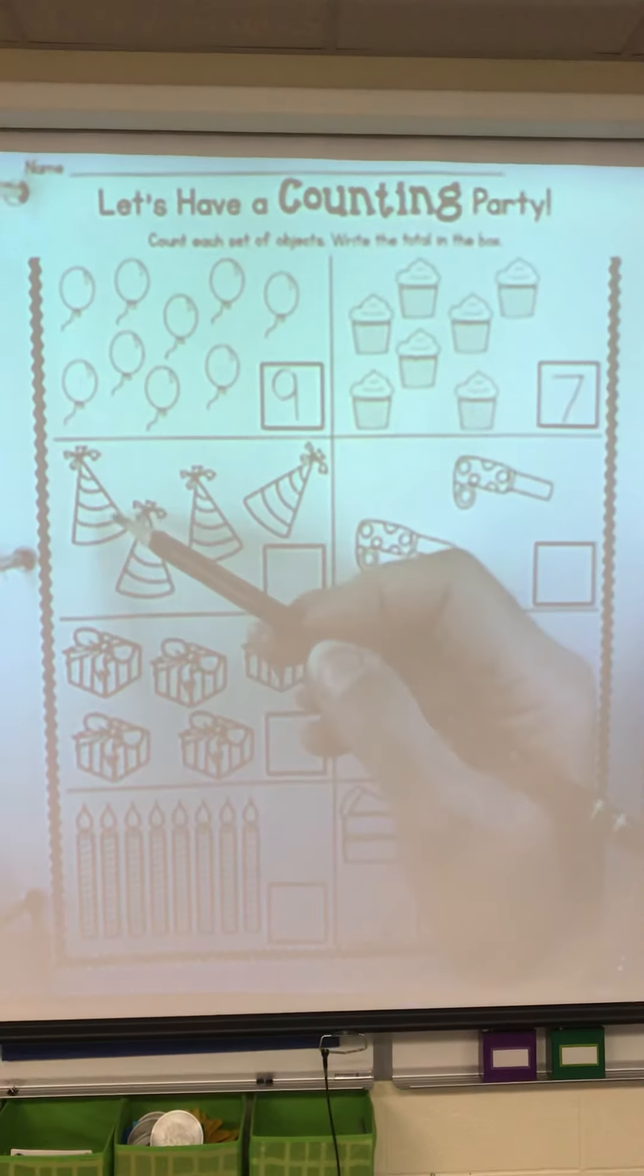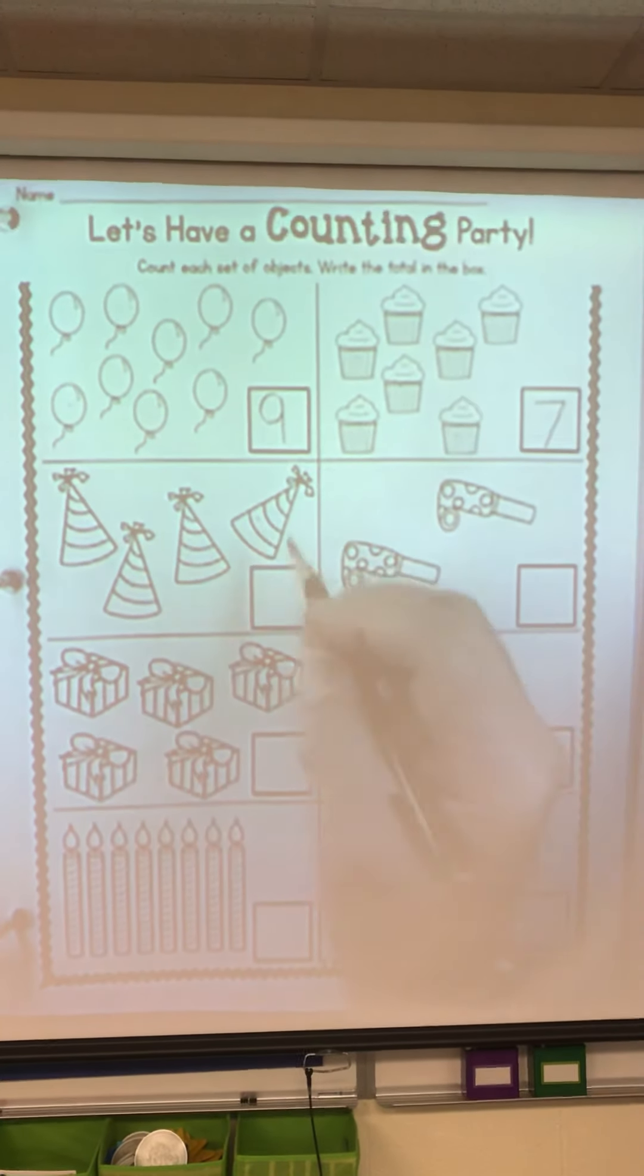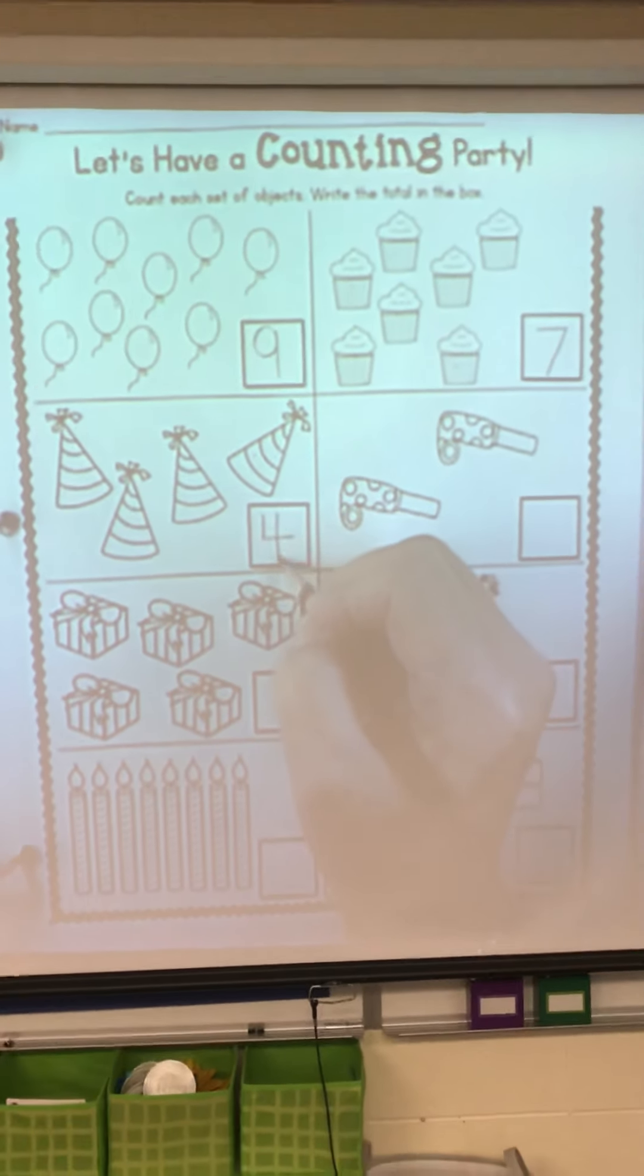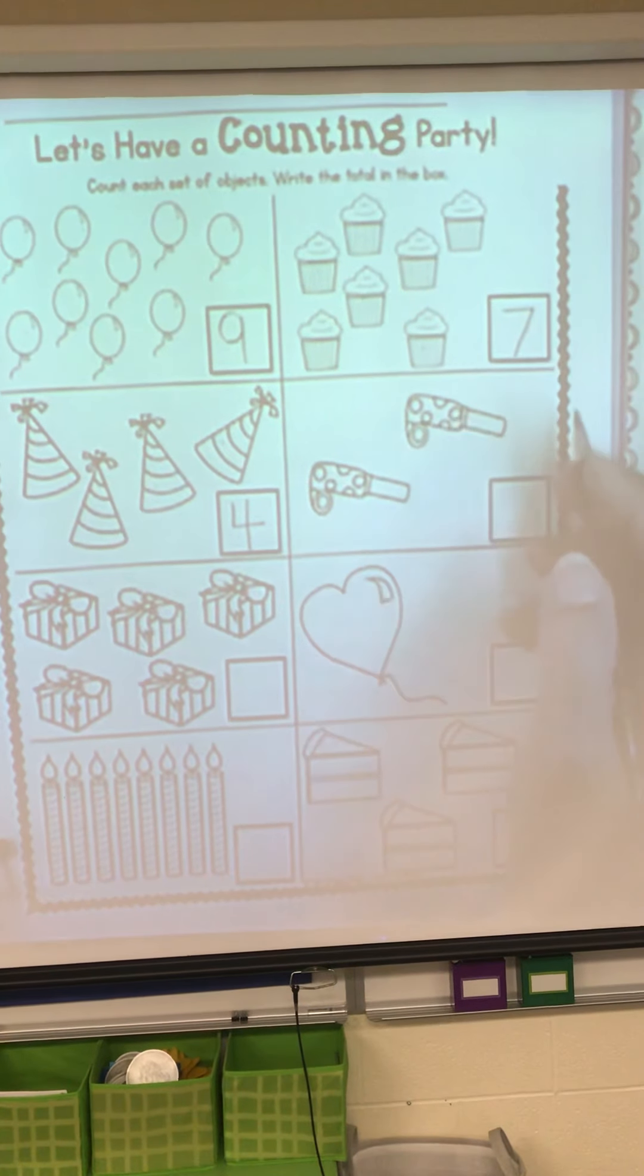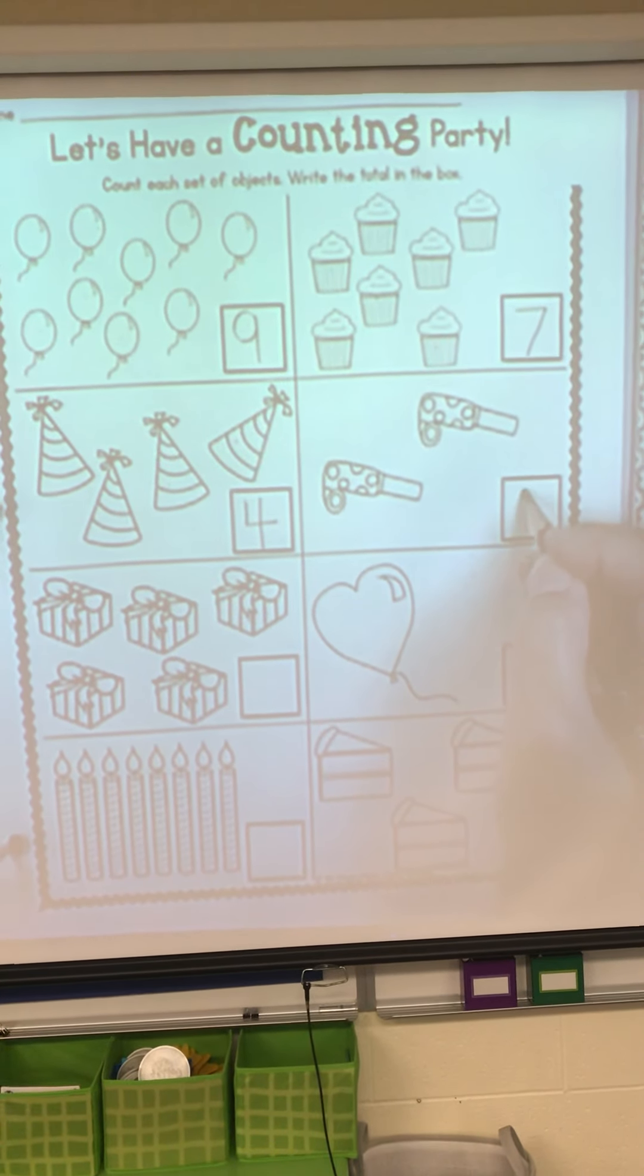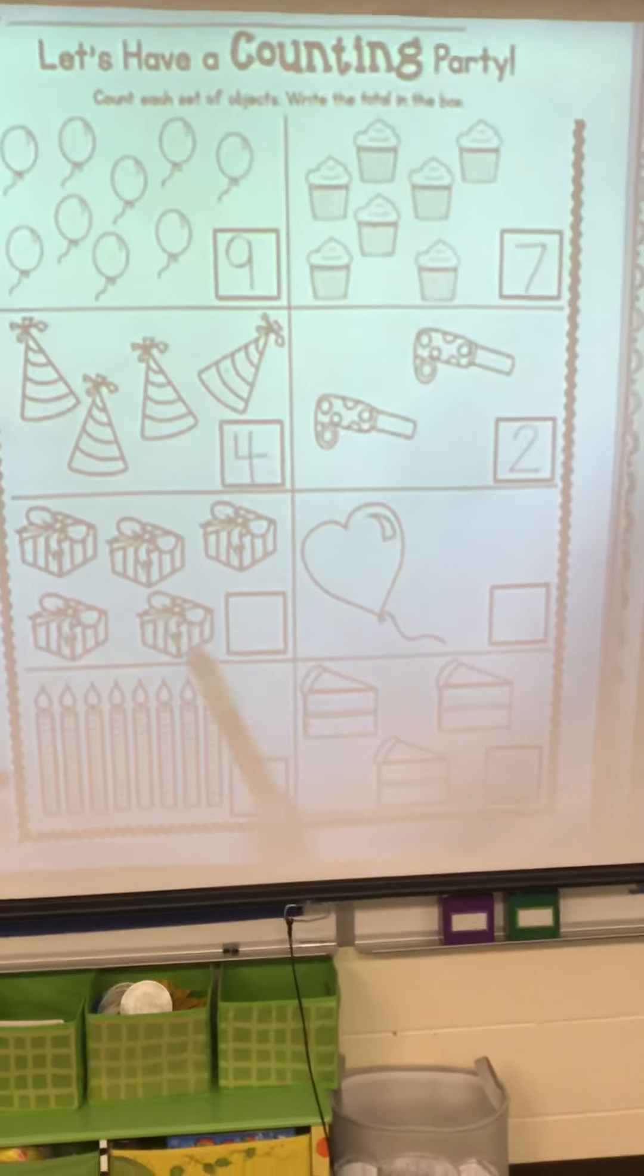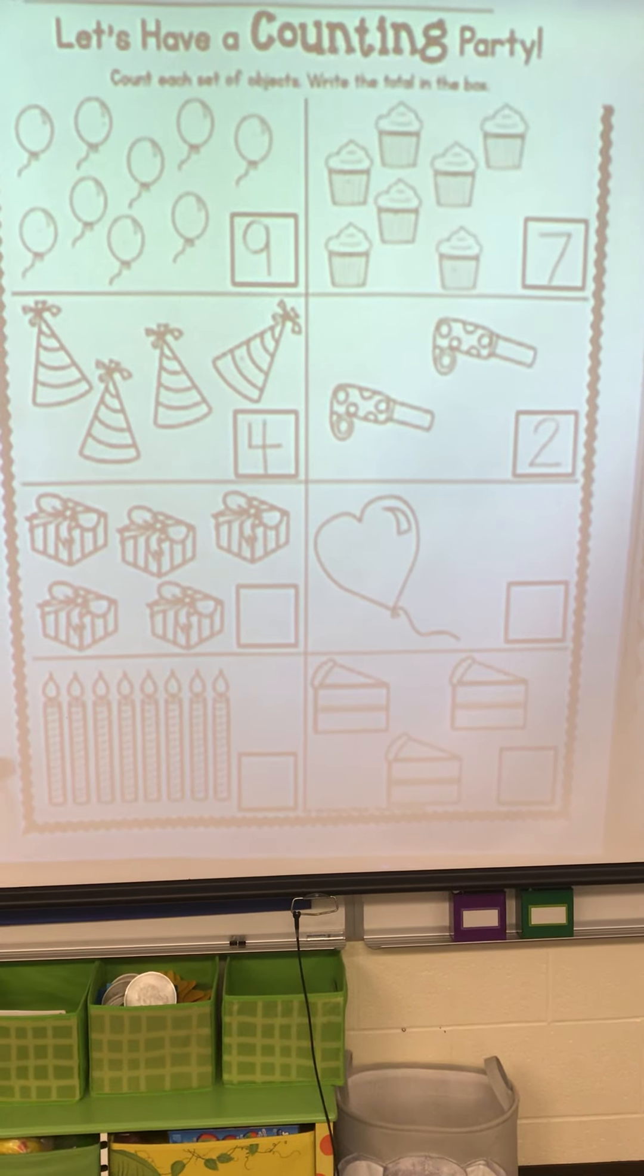Count the party hats. 1, 2, 3, 4. Go down, across, and down some more. 1, 2. Up around, down, across. All right. You finish the rest of the math. Count and write.